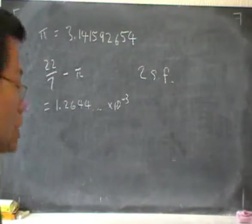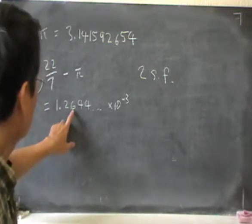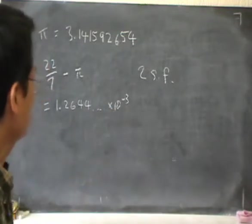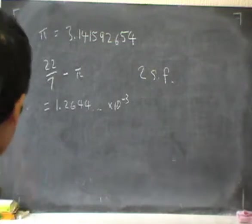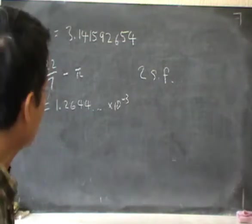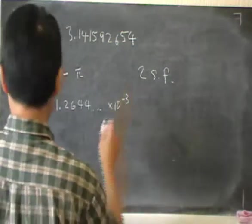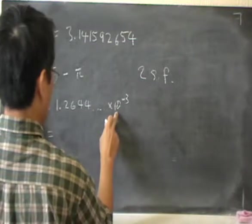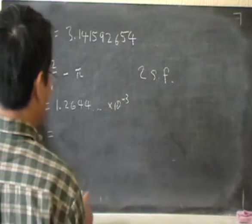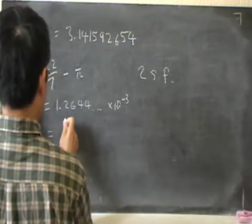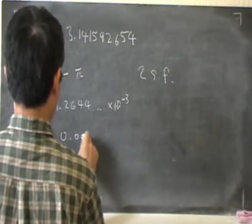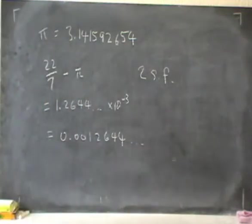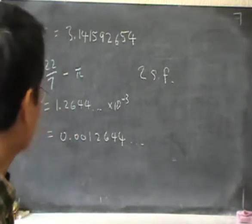Alright, on the calculator, that's the answer that I got. I got 1.2644 and a bunch of other numbers with a times 10 to the minus 3 on it. So it depends on the setting of your calculator. It may give the answer as that, 10 to the minus 3, or it can also give the answer as, 10 to the minus 3 means divide by 1000, it means 0.0012644 and so, or it can give the answer as that.